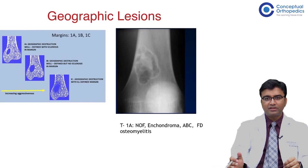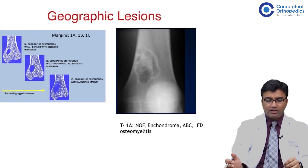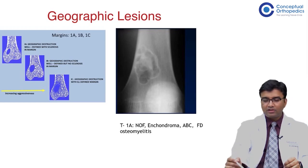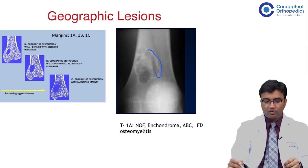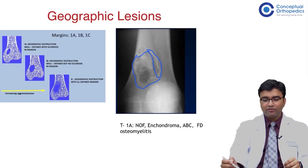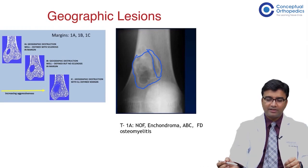Geographic type lesions are classified as 1a, 1b, and 1c. Type 1a means the margins are well-defined with sclerosis. You can see in the diagram the sclerotic zone and sclerotic region. This is seen in non-ossifying fibromas, enchondromas, aneurysmal bone cysts, fibrous dysplasia, and even infections like osteomyelitis.